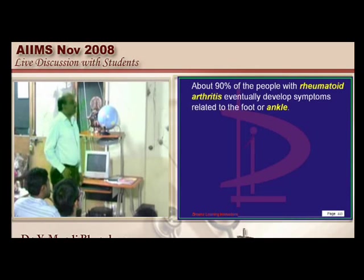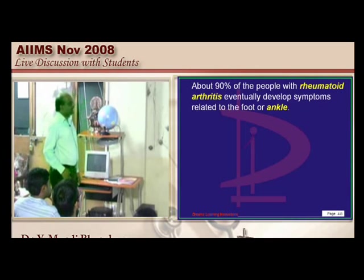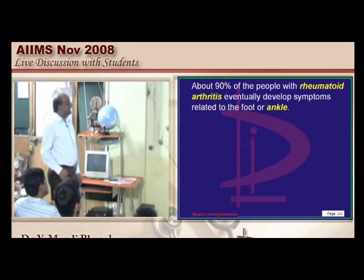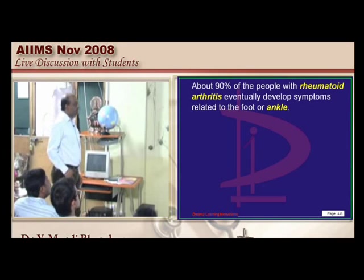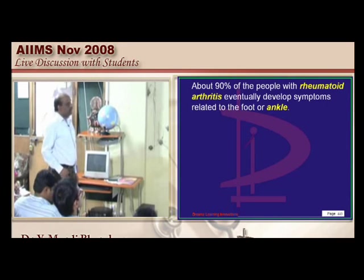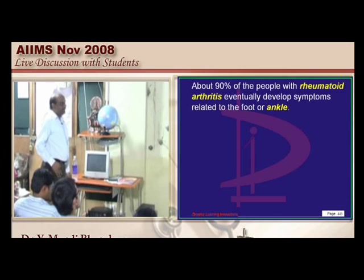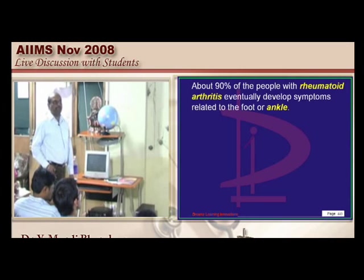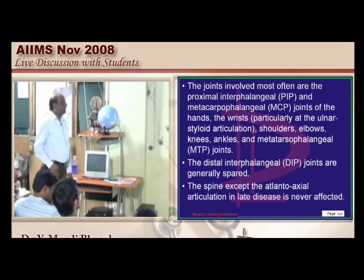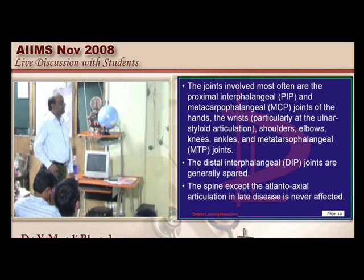The elbow joint is where you can find rheumatoid nodules. Ninety percent of patients will eventually have ankle involvement. The involved joints include PIP, MCP, wrist, and metatarsophalangeal joints.